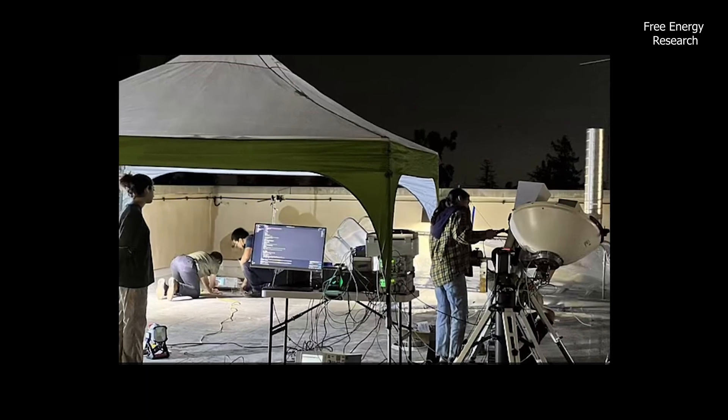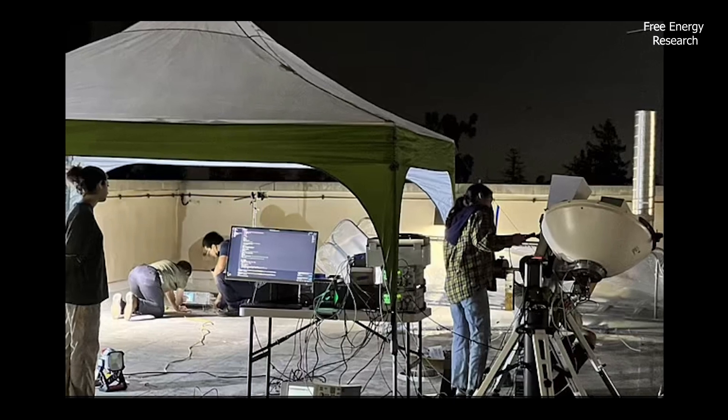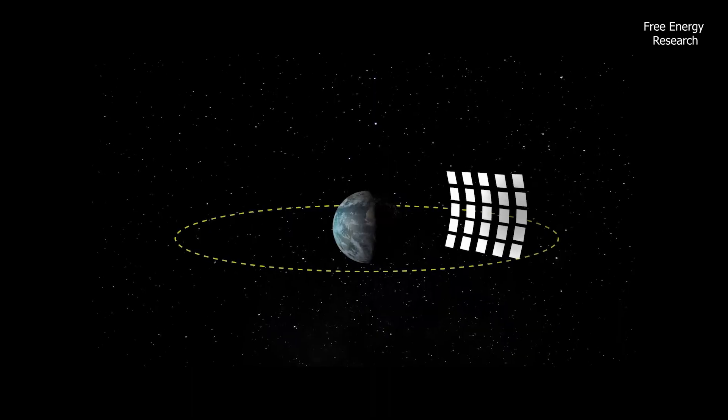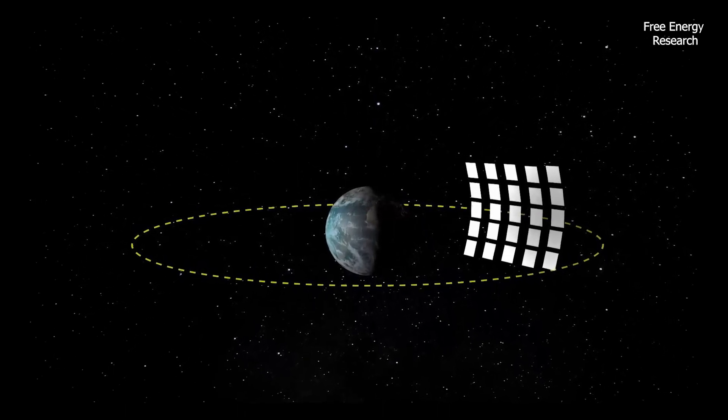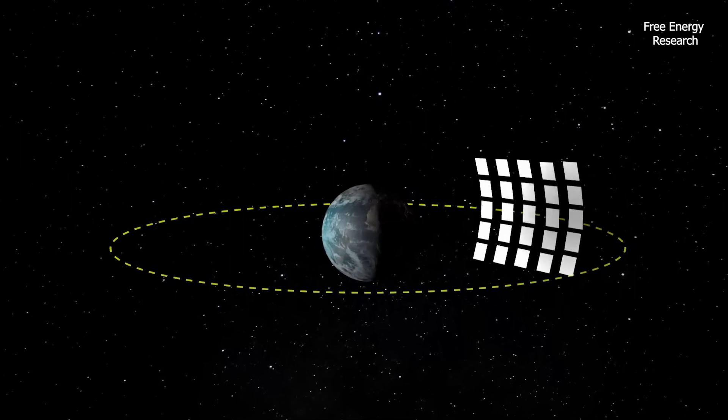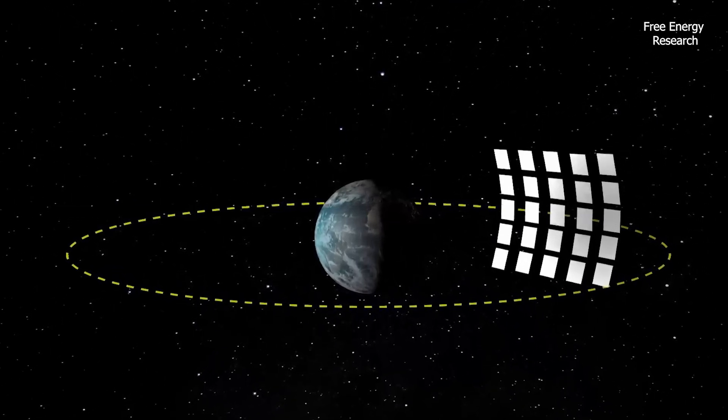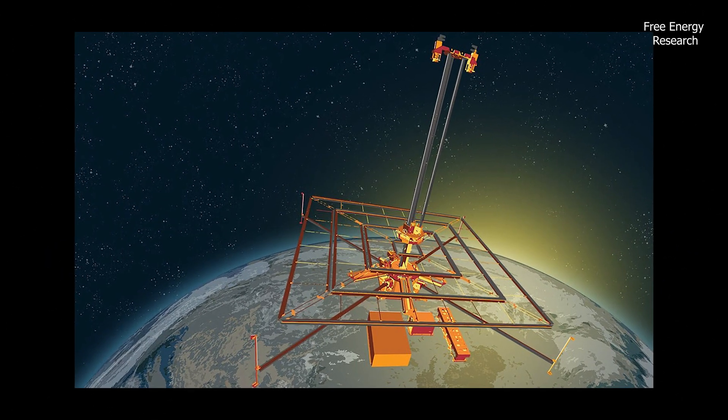In the world first, MAPLE's transmitted energy was detected by a receiver on the roof of a building on Caltech's campus in Pasadena, California. The academics ultimately envision a constellation of spacecraft that collect sunlight, transform it into electricity, then wirelessly transmit that electricity over long distances wherever it is needed.